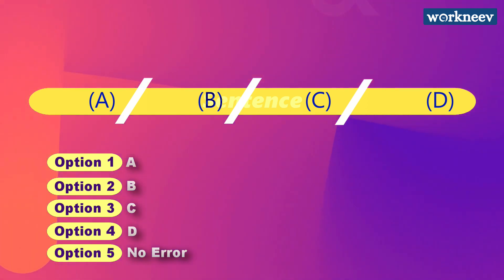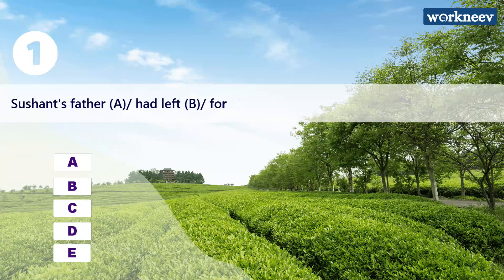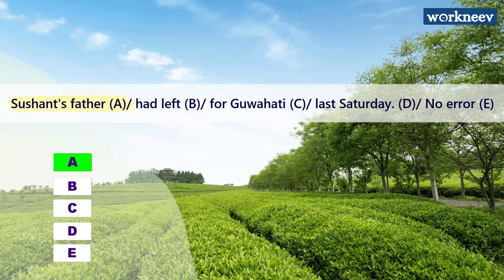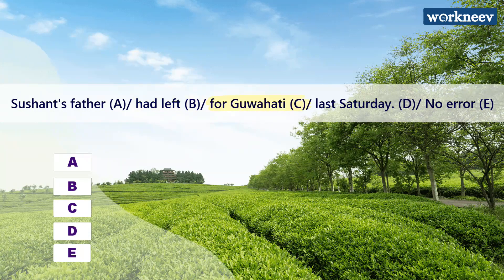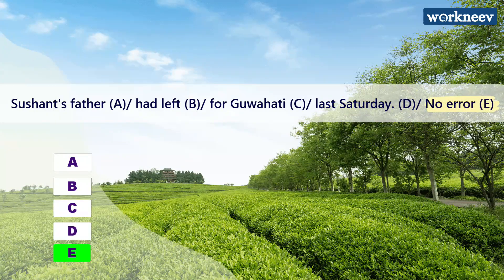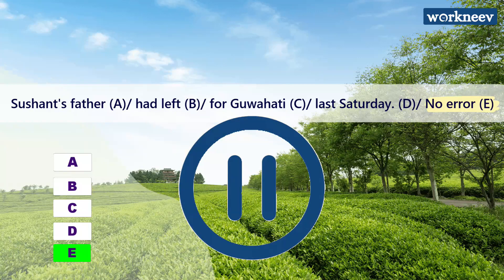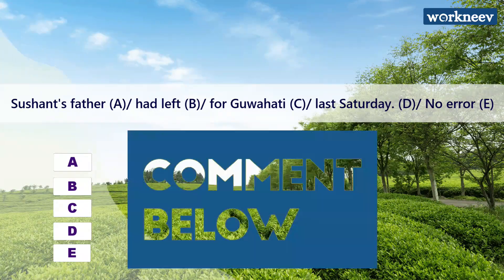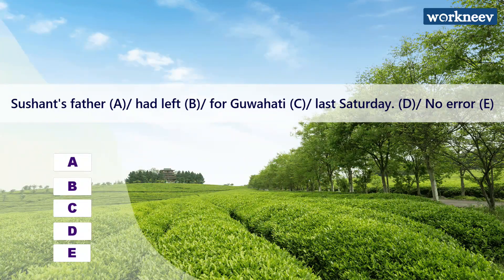Let's solve the first exercise. The sentence is: 'Sushant's father had left for Guwahati last Saturday.' Option A is 'Sushant's father,' option B is 'had left,' option C is 'Guwahati,' option D is 'last Saturday,' and option E is 'no error.' Pause the video and try to find the answer. The correct answer is option B — the error is in the part 'had left.'